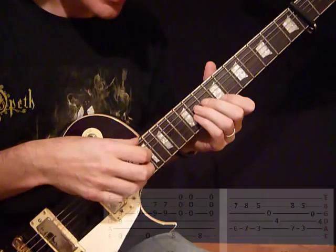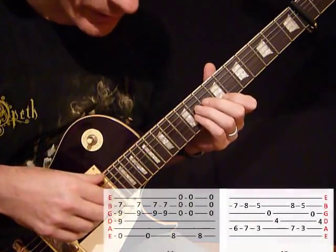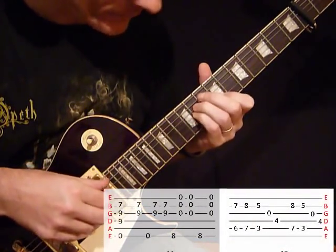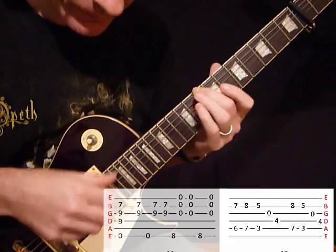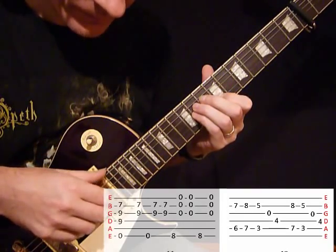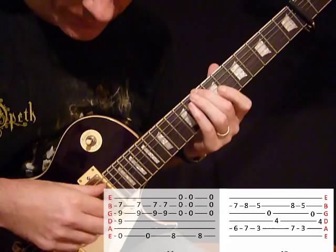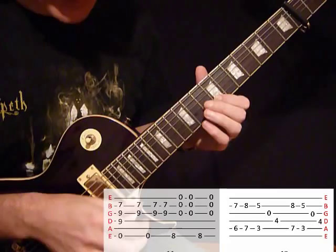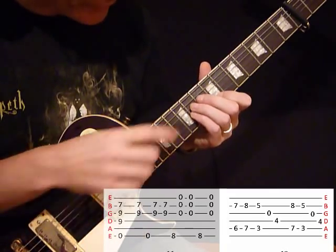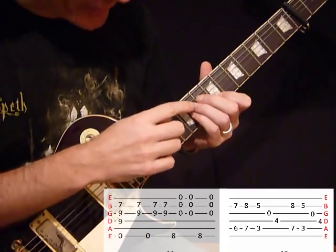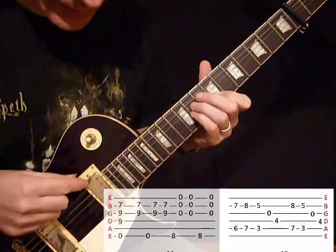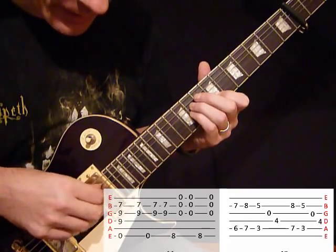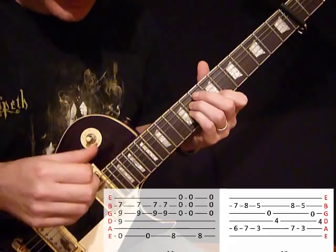And the next part is that slow section that has the really beautiful chords. So your 1st finger is on the 7th fret of the B string, 3rd and 4th fingers, 9th fret of the G and D strings. Play it all together with an open E.